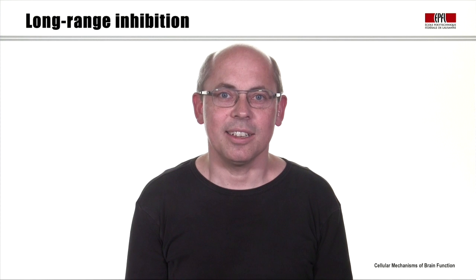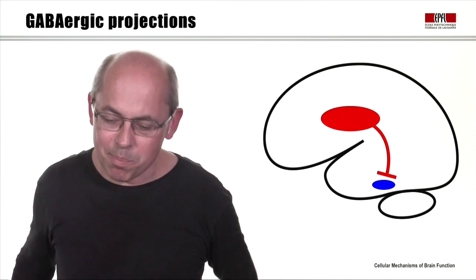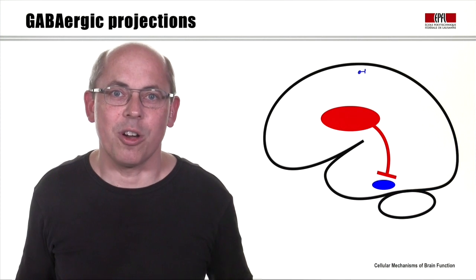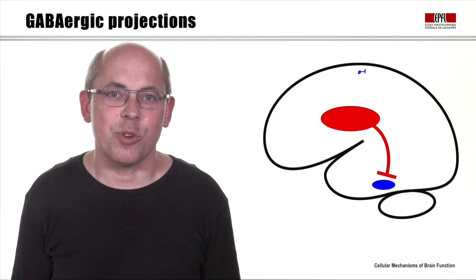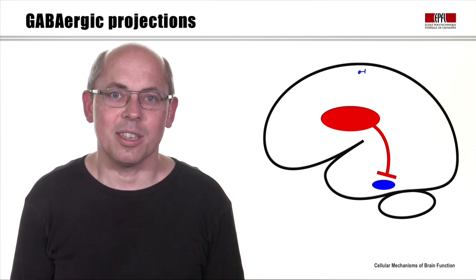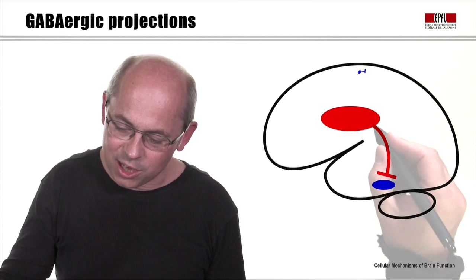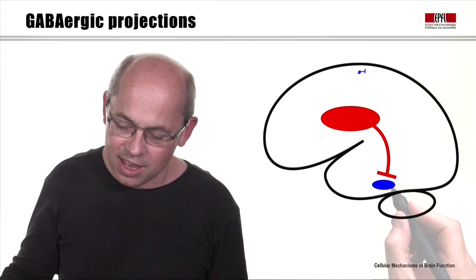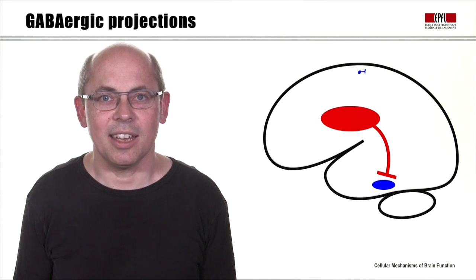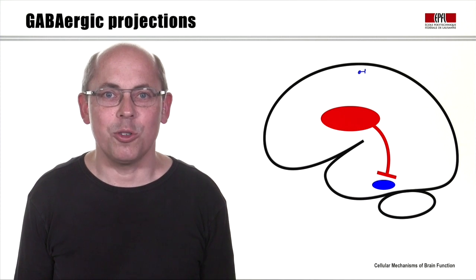It turns out that long-range GABAergic projections are equally important in the brain, and that's what we'll study in today's video. Some parts of the brain, like the neocortex, only have local GABAergic neurons — ones that have a short axon stretching maybe for a few hundred microns, at least predominantly. However, other brain regions that also have GABAergic neurons send long-range axonal projections out of that brain area, and they then inhibit other nuclei in the brain. That's what we'll be studying today: the long-range GABAergic projection neurons.